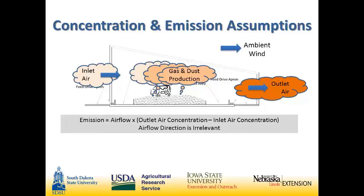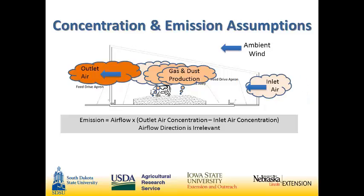The concentration in this barn — or even the concentrations that we measure here — are an indication of air quality. Our emission, though, is when we take the airflow through these openings and multiply that by the difference in concentration between the outlet and inlet. That gives us net emission — what is actually produced in the barn. With our basic assumptions behind this, everything would reverse for a north wind.